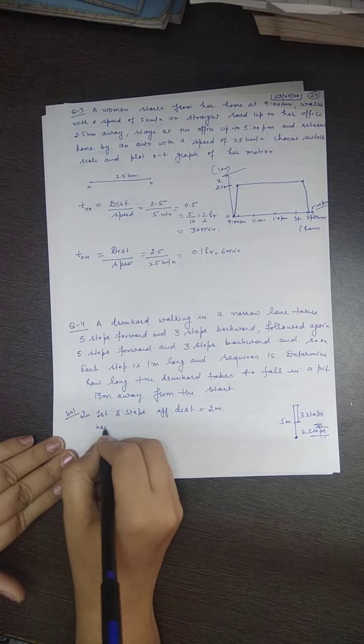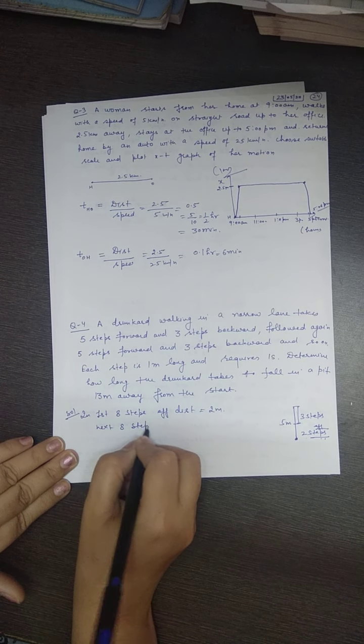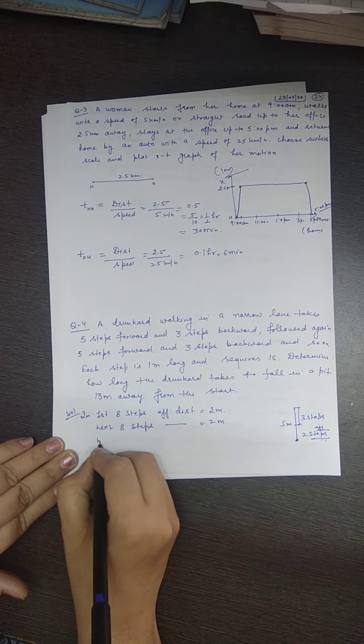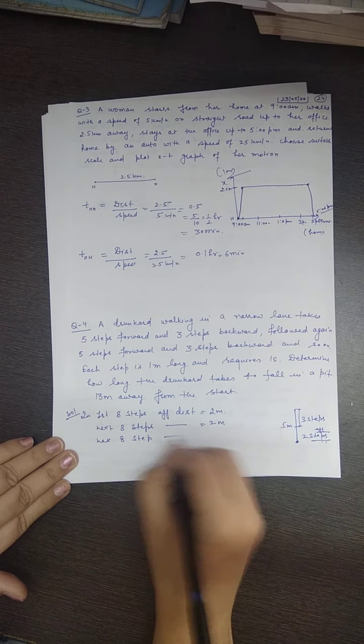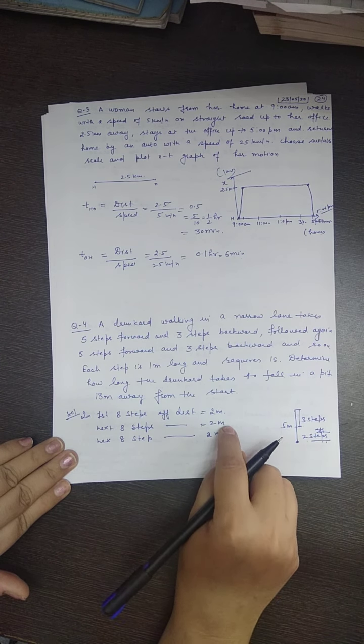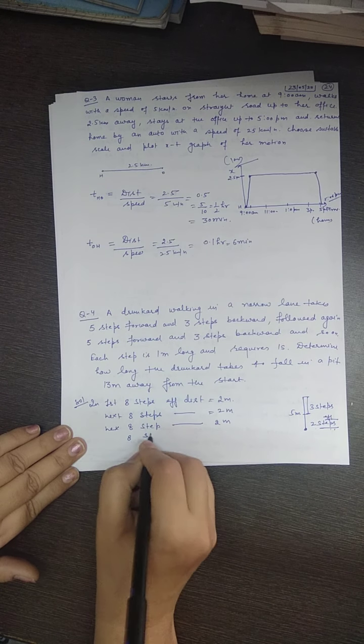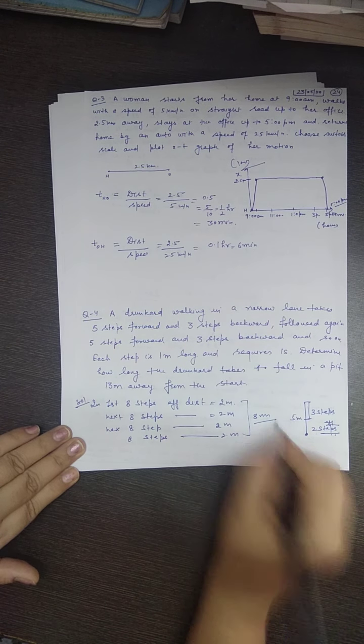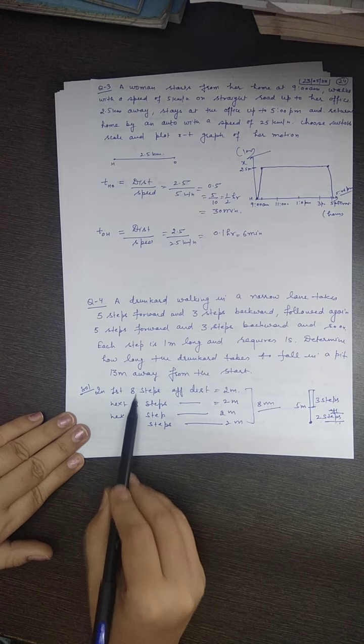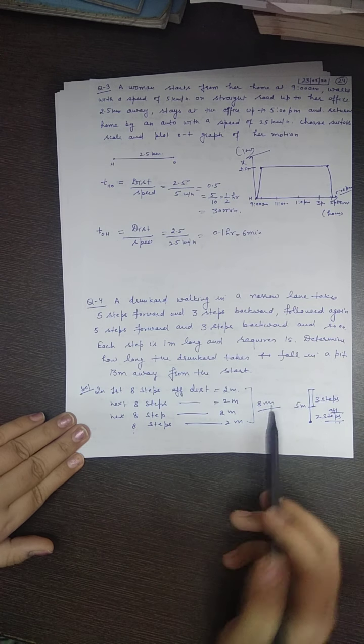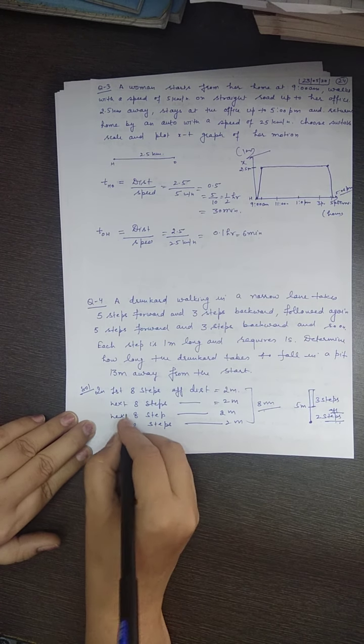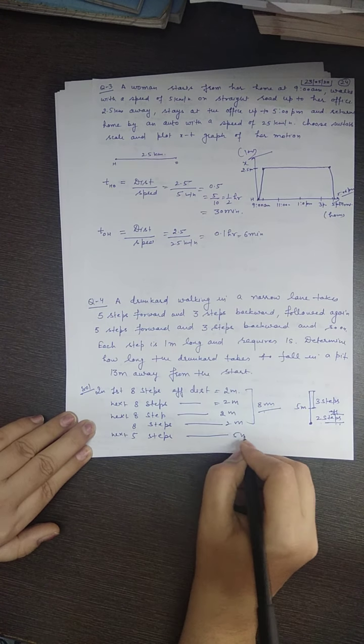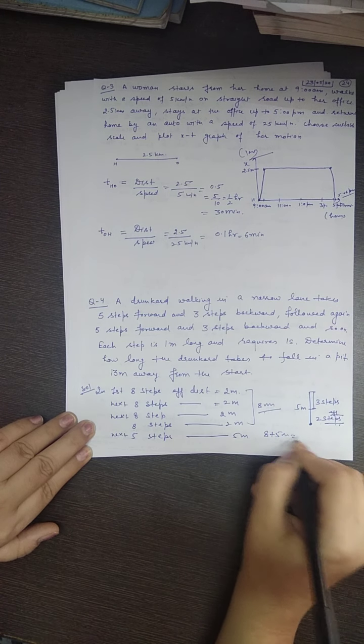In the next 8 steps, he covers 2 more meters distance. That's 4 meters total. Then 6 meters. Next 8 steps, another 2 meters. So in 32 steps, he covers 8 meters. Next 5 steps forward, he will cover 5 meters distance. So 8 plus 5 meters equals 13 meters, and the pit is at 13 meters distance.